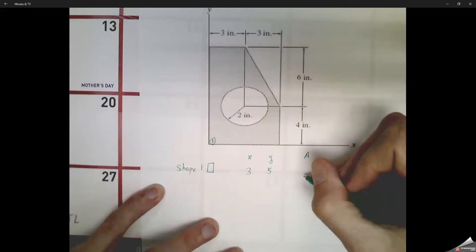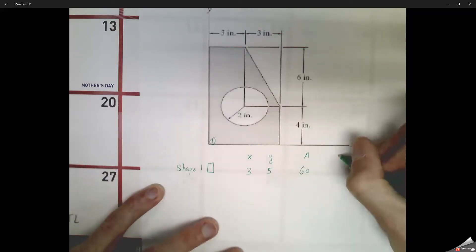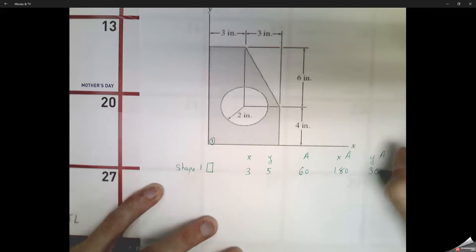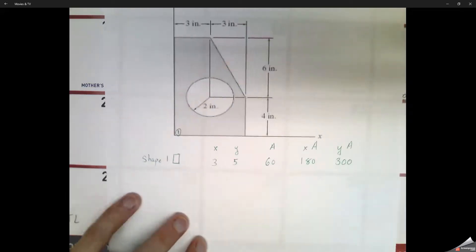All right, so right now we're looking at centroid worksheet number two, question number three. We're going to start off by taking this complex shape, breaking it up into smaller, simpler shapes.